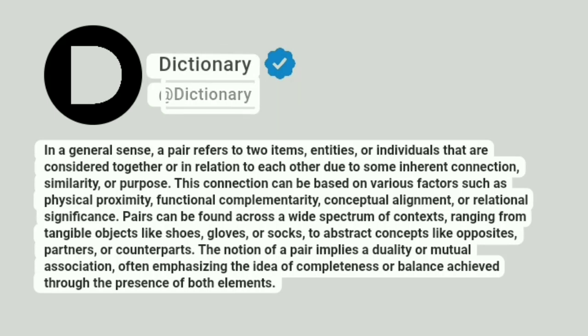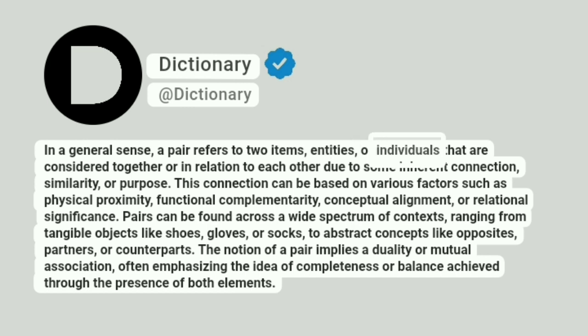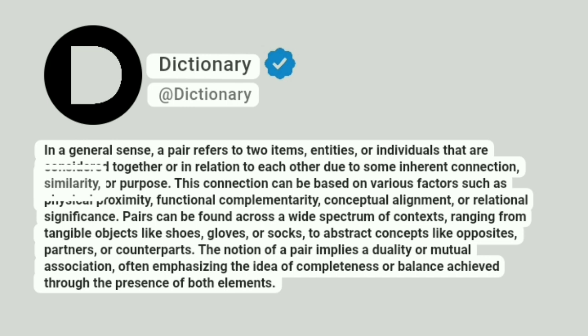At Dictionary. In a general sense, a pair refers to two items, entities, or individuals that are considered together or in relation to each other due to some inherent connection, similarity, or purpose.